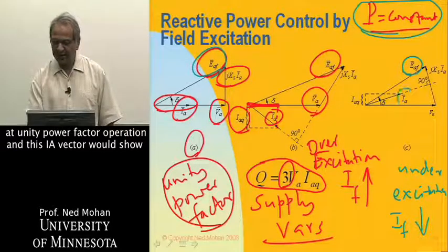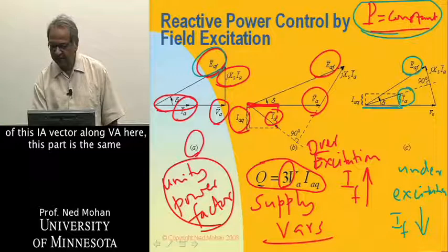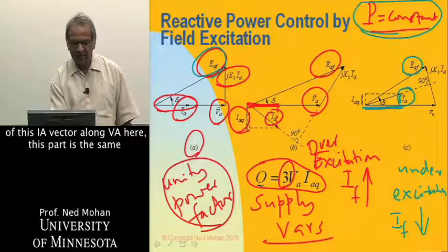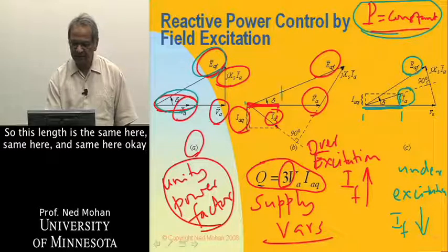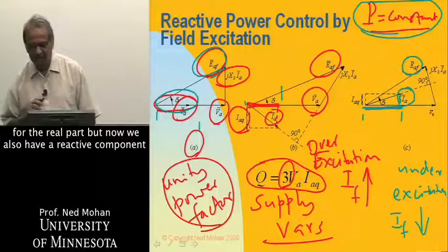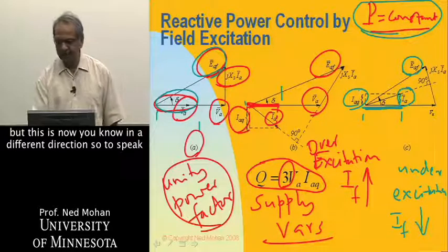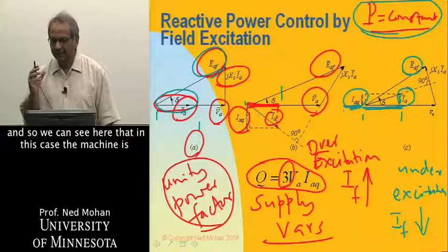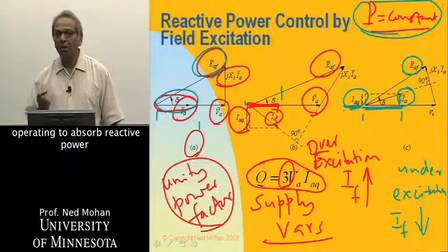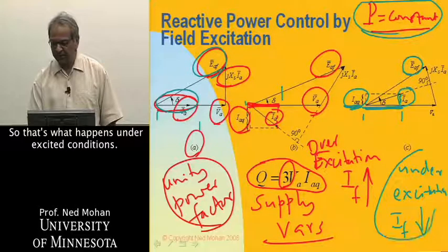This IA vector shows up in a different position. Taking the projection of IA along VA, the real component is the same as before — the same length in all three cases. But now there is a reactive component in a different direction, and in this case the machine is operating to absorb reactive power from the grid as inductors would. That's what happens under under-excited conditions.